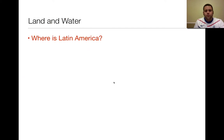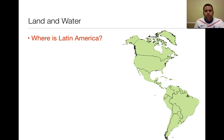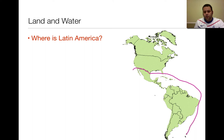The first thing we need to do is identify where Latin America is. Here's a map of the Western Hemisphere. Latin America is defined as south of Mexico, through the Caribbean Islands, all the way down to the very tip of Chile and Argentina in South America. So this is where Latin America is.